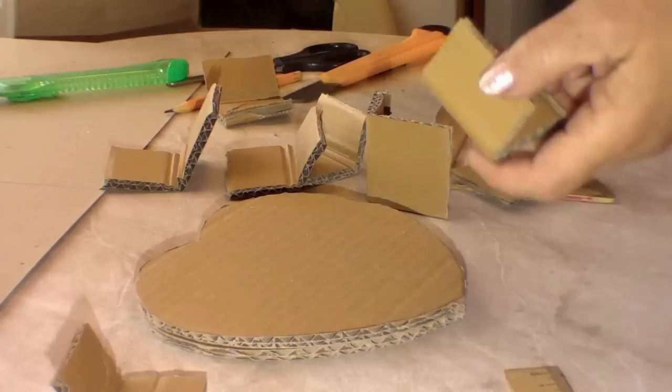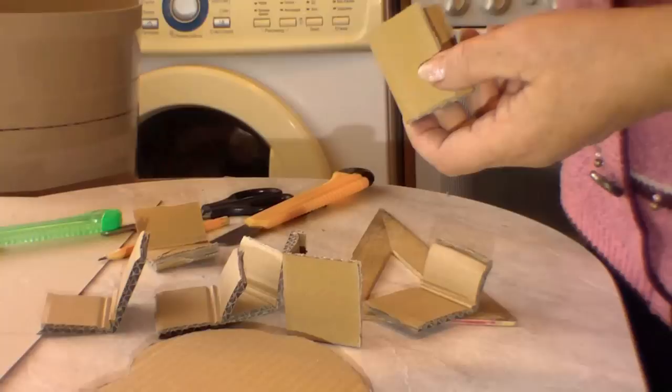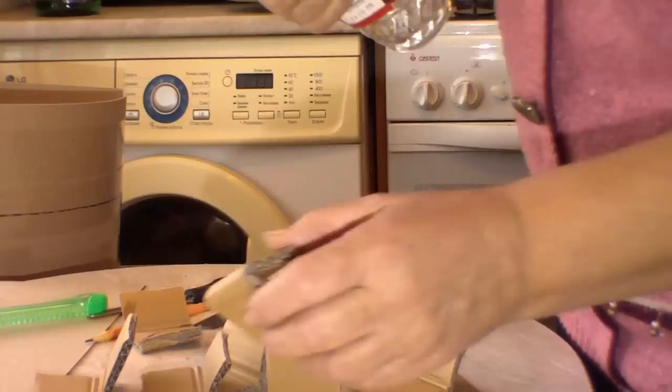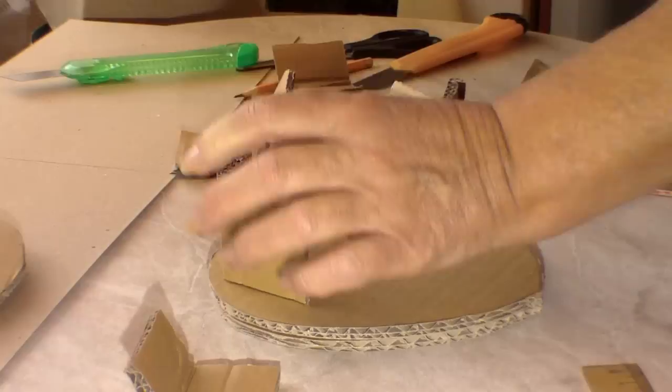After we have bend every piece, we cover each rib with dragon glue. And stick to our form no matter where and how. Just place them along the whole bottom.